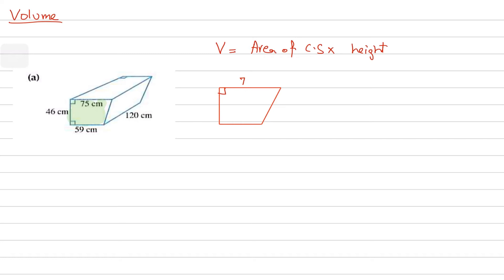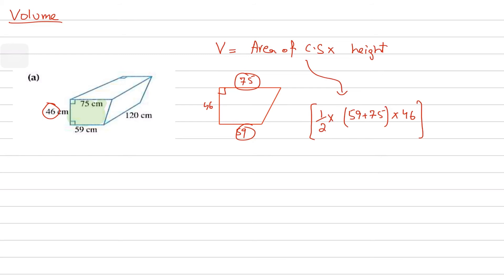To find the volume, first find the area of the trapezium cross section: one-half times sum of parallel sides (59 and 75) multiplied by the height of the trapezium, which is 46. Then multiply by the height of the prism — the perpendicular distance between the two identical faces — which is 120.